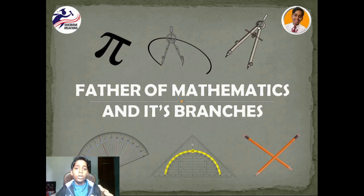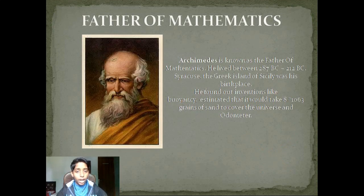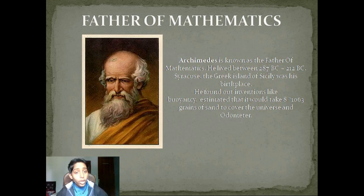The father of mathematics is Archimedes. Archimedes is known as the father of mathematics. He lived between 287 BC to 212 BC. Syracuse, the Greek city of Sicily, was his birthplace.